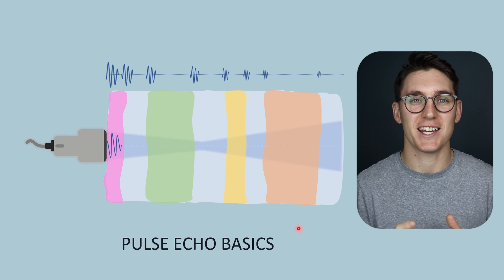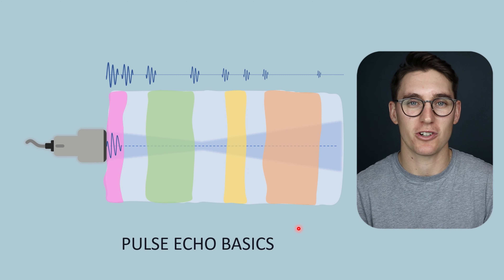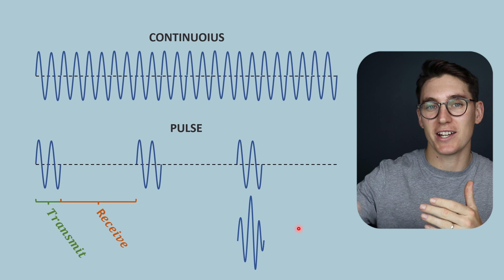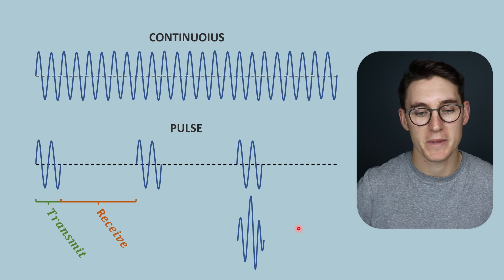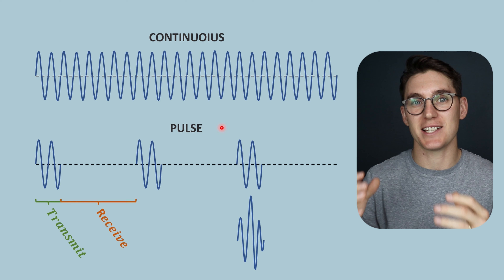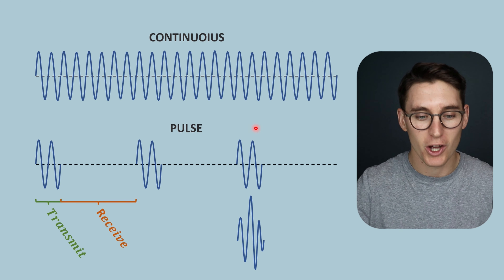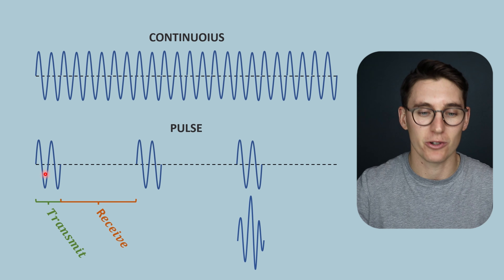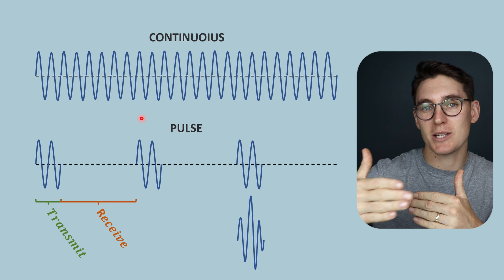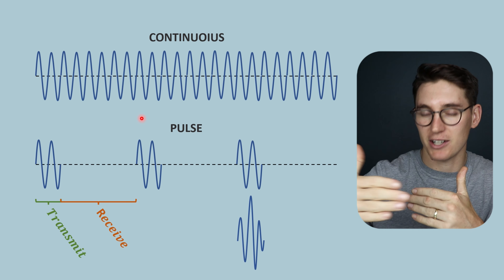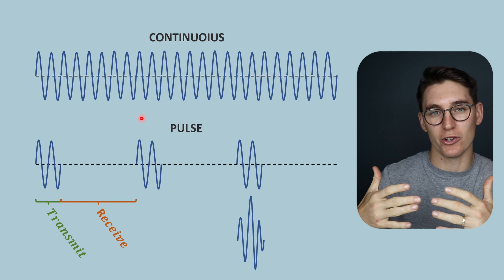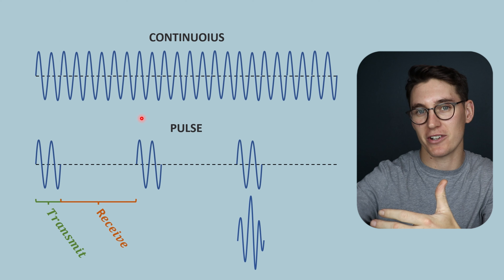What we're going to be looking at today is called pulse echo ultrasonography. You can get continuous ultrasound — a wave that is continuously passed through a tissue — or pulse echo ultrasound. To generate an image we need to use pulse echo ultrasonography. Continuous ultrasound is continuously transmitting an ultrasound wave through tissue and leaves no time for listening to the echoes, the waves that are bouncing off the various different tissues.